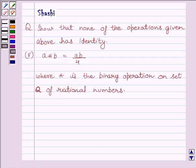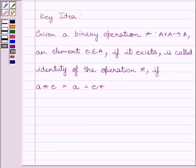First of all, let us understand the key idea to solve the given question. Given a binary operation star from A cross A to A, an element E belonging to A, if it exists, is called identity of the operation star if A star E is equal to A is equal to E star A for every A belonging to set A.